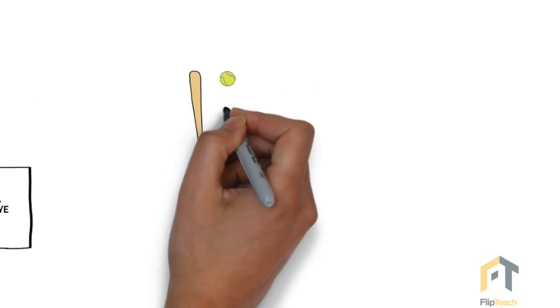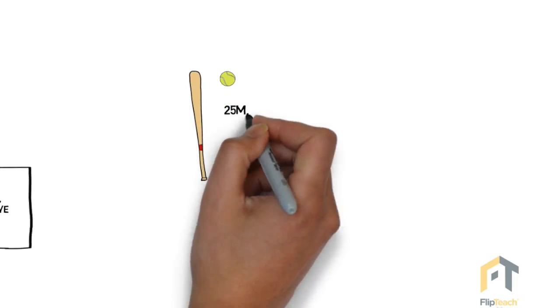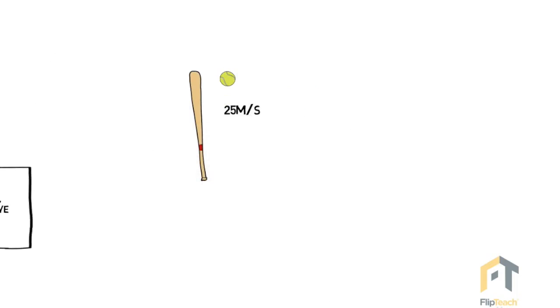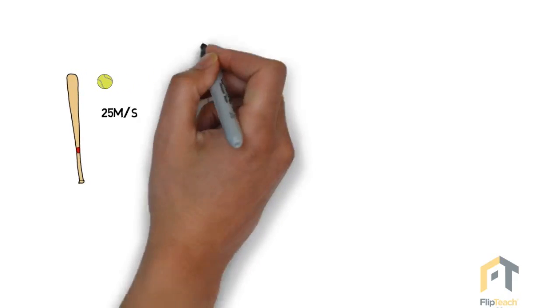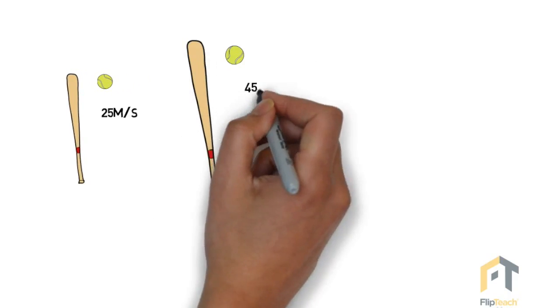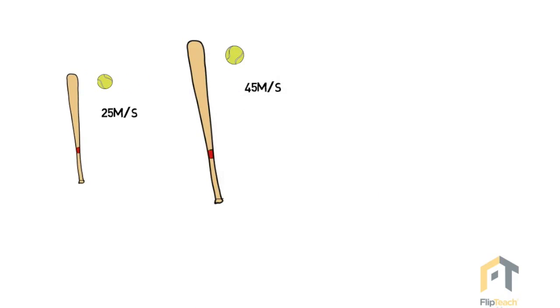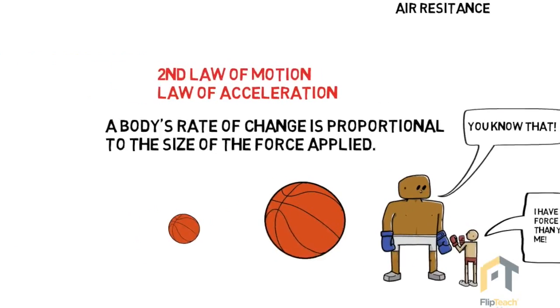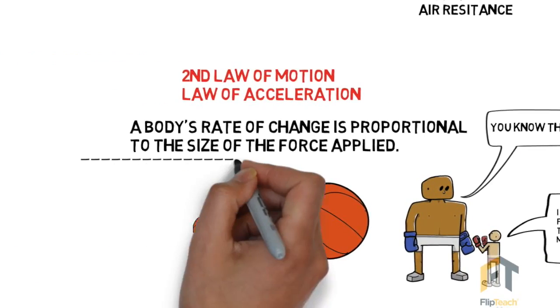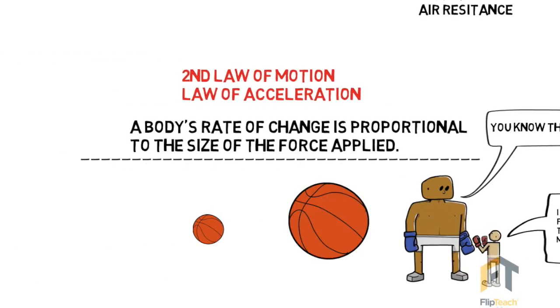Let's use this bat here — if we hit the ball with a certain amount of force it might produce 25 meters per second of acceleration, but if we hit it with more force using a larger bat it may increase the meters per second. Therefore, the rate of change is proportional to the force that's applied.